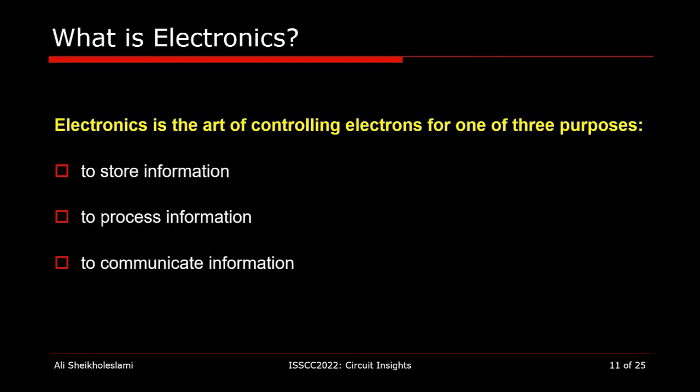I think I'm now ready to give you a definition for electronics. Electronics is the art of controlling electrons for one of three purposes: to store information, to process information, and to communicate information. We do not have to use electrons to do any of these tasks — we can use water or other materials to do the same. But electronics uses electrons to do all of these at incredible speed and precision, and at such a low cost and energy that we all enjoy today.